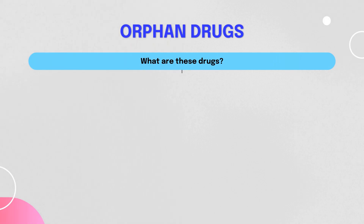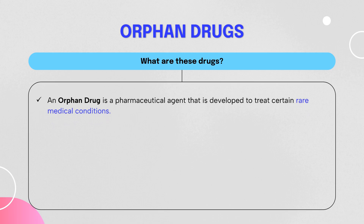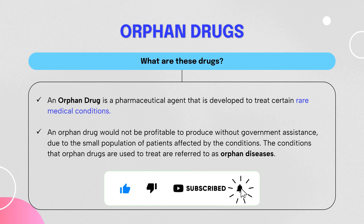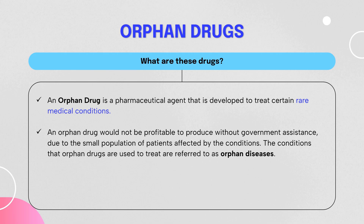An orphan drug is a pharmaceutical agent developed to treat certain rare medical conditions. Such a drug would not be profitable to produce without government assistance, because it is used for rare diseases affecting a very small number of people. When a drug must be manufactured for a small population, the cost increases, so the government intervenes — subsidizing or reducing taxes on the drug so that the rare disease population can access it. The conditions requiring orphan drugs are called orphan diseases or rare diseases.